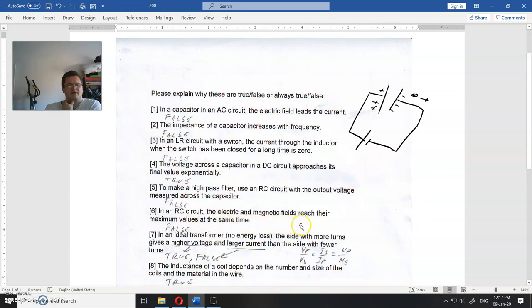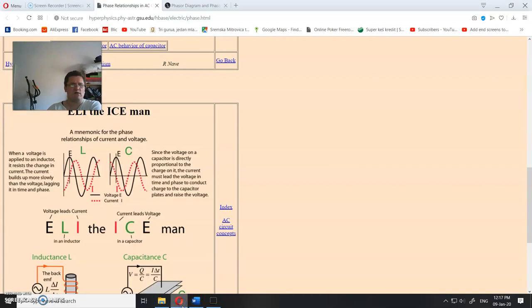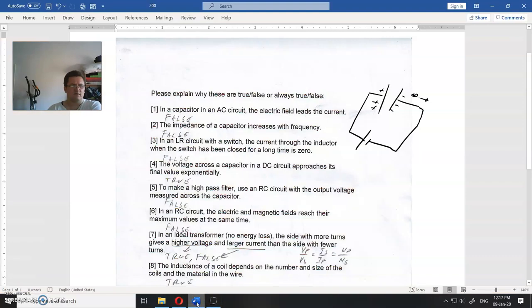In the RC circuit the electric and magnetic fields reach their maximum values at the same time. That is false. But of course there is false. Because resistance and actually that is, actually that is in the capacitor magnetic fields reach their maximum. Electric magnetic fields. Let me see electric and magnetic field and electric and with the maximum value at the same time.